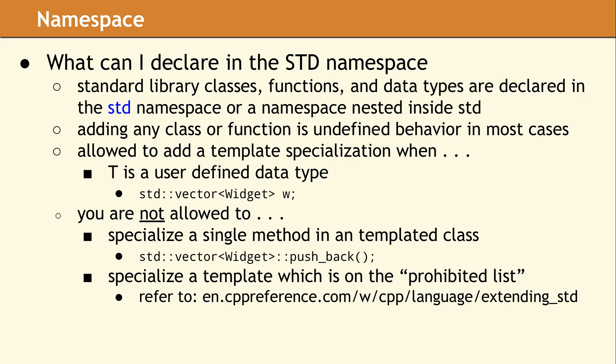Although you can add a template specialization for a user-defined data type, there is a particular list of template classes in the standard namespace where even this has been prohibited. For example, you are not allowed to specialize any of the type traits like is enum. The full list of prohibited classes is scattered throughout the standard, and there is a nice summary of this list on CPP reference.